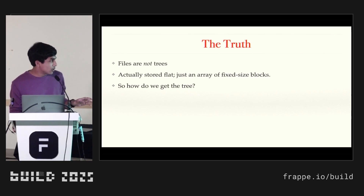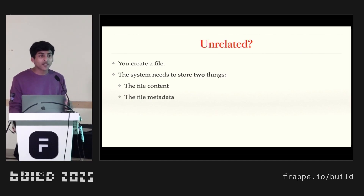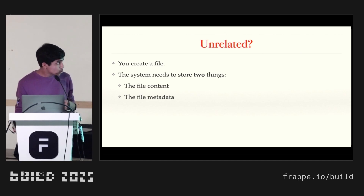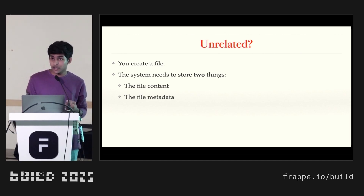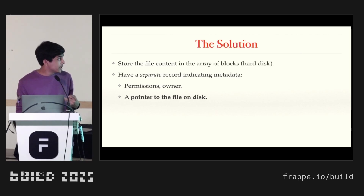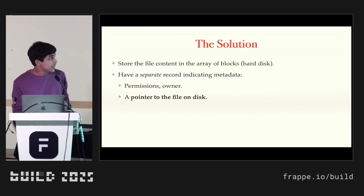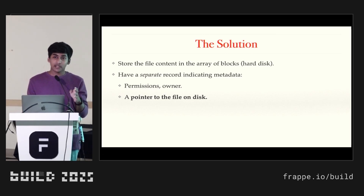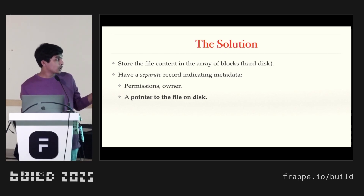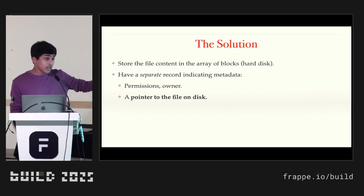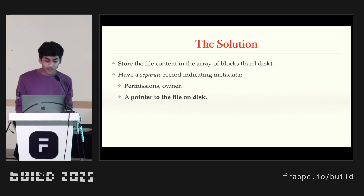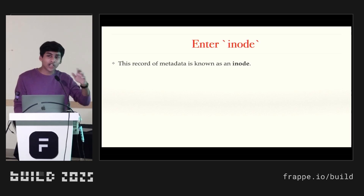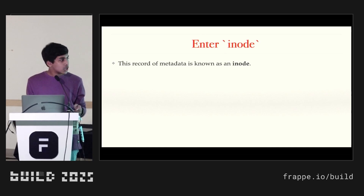Let's look at a seemingly unrelated problem first. When you create a file, you have the contents of the file — whatever you put inside it. But where do you store metadata about the file? Where do you store the file name, the owner, the file permissions, and things like that? The way Unix solves this is very simple: we store the file content in the file system on the disk, and we have a separate record in a table with all the metadata — the name, the permissions, the owner, and everything you might want. And importantly, we have a pointer to that file on disk. This pointer structure is known as an inode table. Inode stands for index node. An inode stores all the metadata about a file, and the file is actually stored separately on the disk.